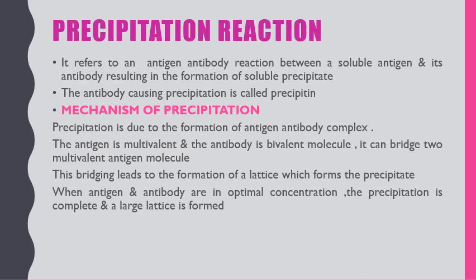When we speak about the mechanism of precipitation, precipitation is due to the formation of an antigen-antibody complex. The antigen is multivalent and the antibody is a bivalent molecule, so it can bridge between two multivalent antigen molecules. This bridging leads to the formation of a lattice which forms the precipitate. When antigen and antibody are in optimal concentration, the precipitation is complete and a large lattice is formed.